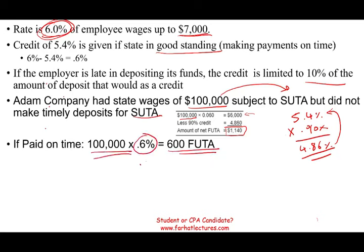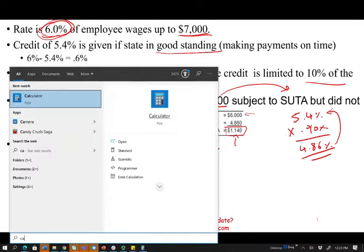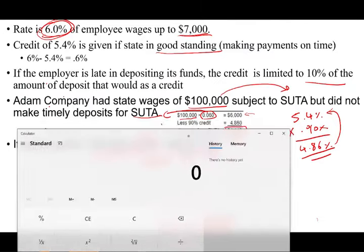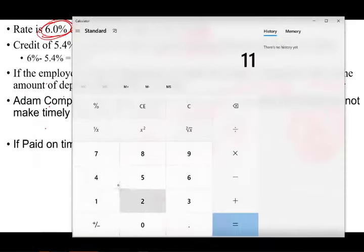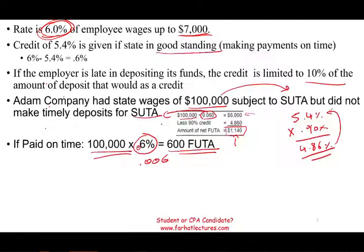Don't confuse 0.6% with 6%. So this is what Adam ends up paying: $1,140 because they're not in good standing. If you want to compute the effective net FUTA rate: $1,140 divided by $100,000 equals 1.14%. If they had paid on time, it would have been just 0.6%.